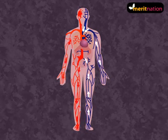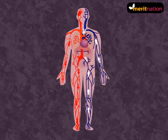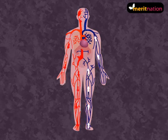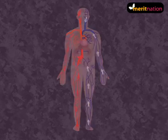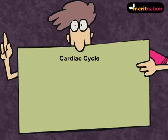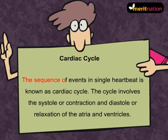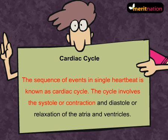Our heart is an important component of the cardiovascular system. It creates pressure every time it beats, and this pressure moves the blood to every cell in our body. The sequence of events in a single heartbeat is known as the cardiac cycle. This cycle involves the systole or contraction and diastole or relaxation of the atria and ventricles.